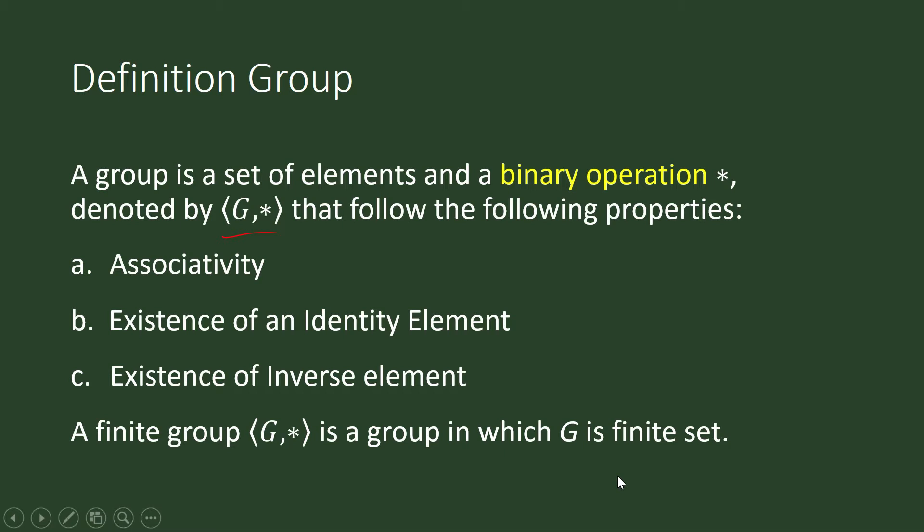A finite group is a group in which G is a finite set. The examples we showed last time — the set of real numbers and the set of integers — are not finite groups; they are infinite sets.